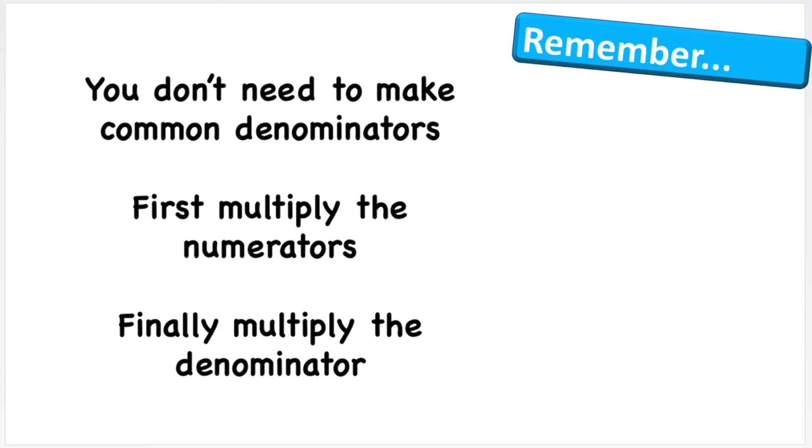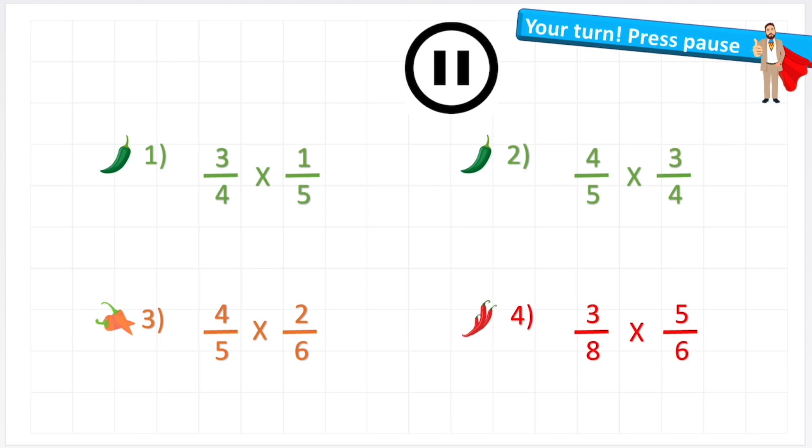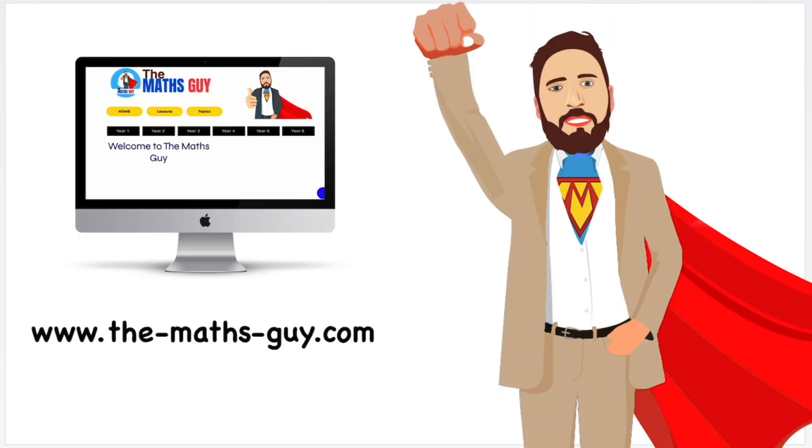Let's have a look at things to remember. You do not need to make common denominators for multiplication. First multiply the numerators and then finally multiply the denominators. So here you go, here are four questions for you to have a go at. Take your time, work them out and put your answers in the comment section below. I'm going to mark them all. And there we have it. Hopefully this video is useful for you. If it was, think about subscribing to the channel because we make daily maths videos. Like this video and I'm going to see you in another time. Peace out.